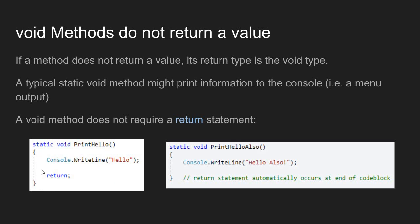The statements that actually do the work are included in the body of the method. Here I'm calling the console.WriteLine method, passing the string value inside it, and then we have our return statement. When we get to the return statement, we exit the method and return back to wherever we were called from.